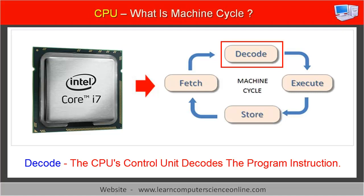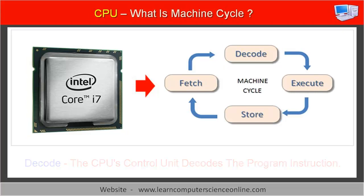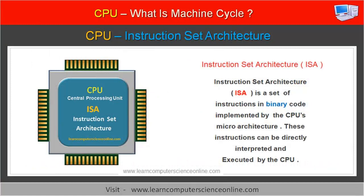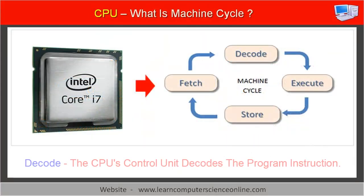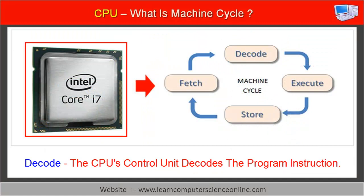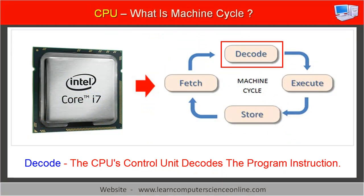The decode part of the machine cycle includes decoding the program instruction. The control unit inside the CPU decodes the program instruction as per the processor architecture. Each processor chip implements a set of binary commands which defines the various operations performed by the CPU. This set of binary commands is called the instruction set architecture, ISA, of the CPU. The control unit inside the CPU chip generates the necessary signals for the arithmetic logic unit to perform the desired operation on the operand.